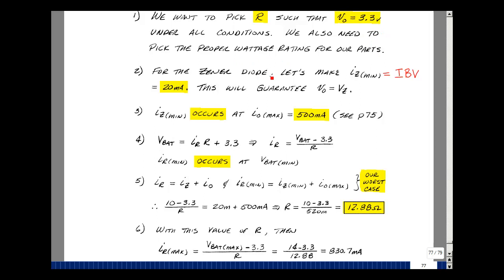I have a 3.3 volt Zener diode with a specified current for a guaranteed voltage. Let's consider that to be our minimum value, which we also call I sub BV in our VI characteristics. Now, what does the minimum Zener current occur? From our analysis back on page 75, it occurs when the load current is the maximum. Remember that the Zener and the load are sharing a current with the resistor R.